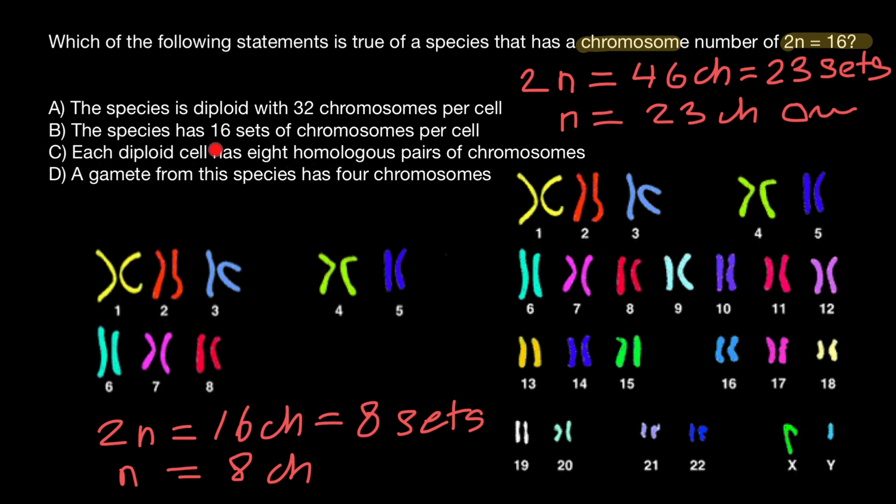Variant C, each diploid cell has eight homologous pairs of chromosomes. And this is the correct statement. So this is going to be our choice.